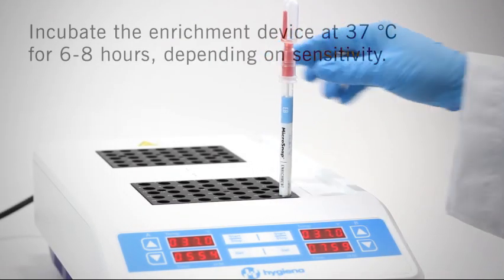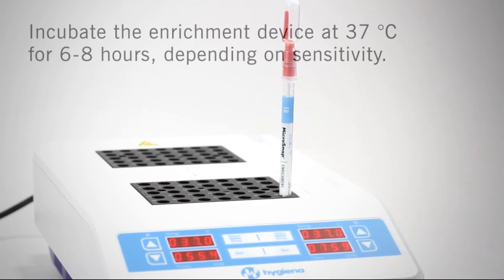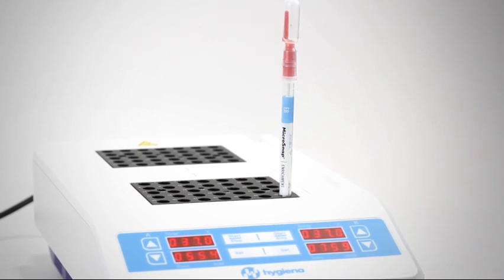Shake the tube gently to mix the sample with the enrichment broth. Incubate the enrichment device at 37 degrees Celsius for 6 to 8 hours depending on the sensitivity required for your sample.